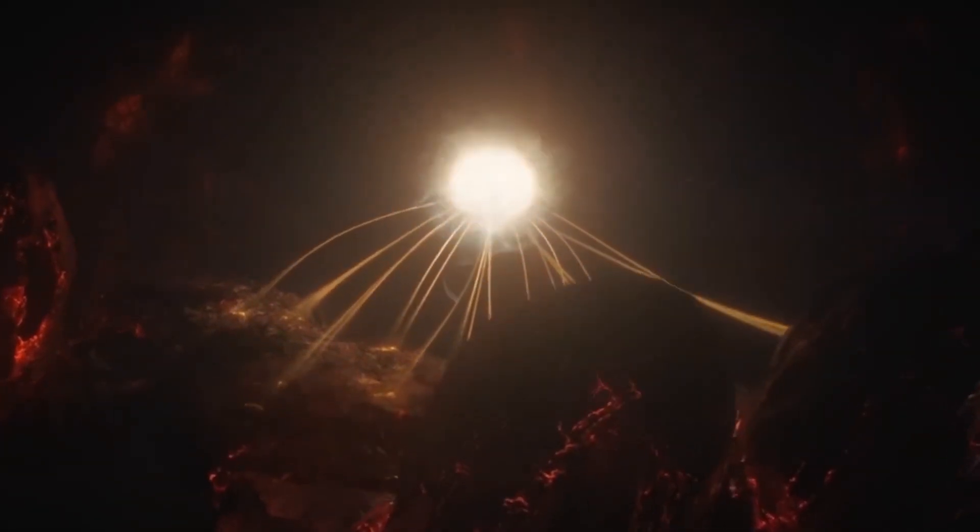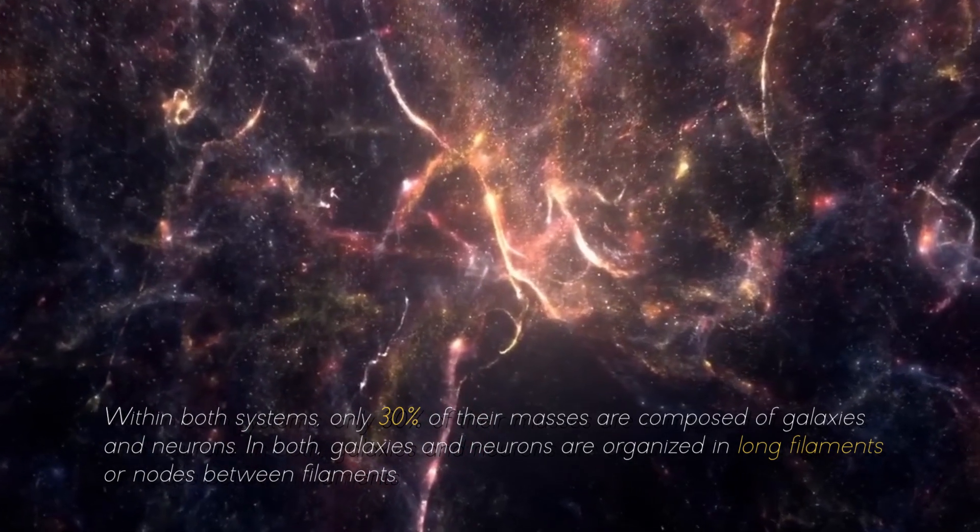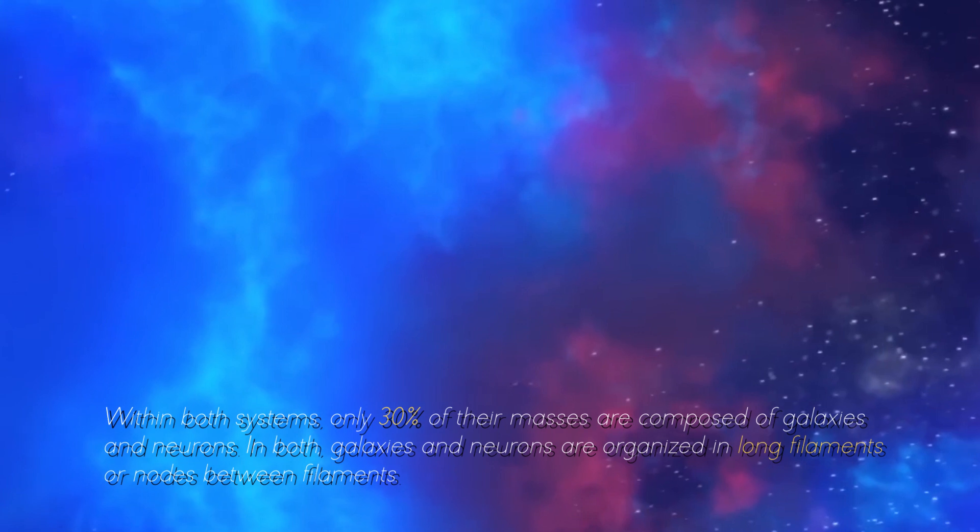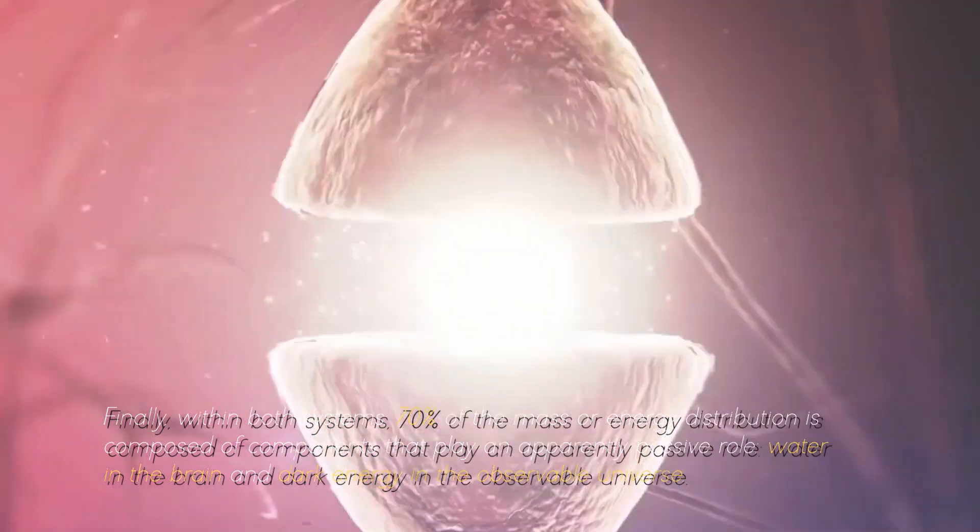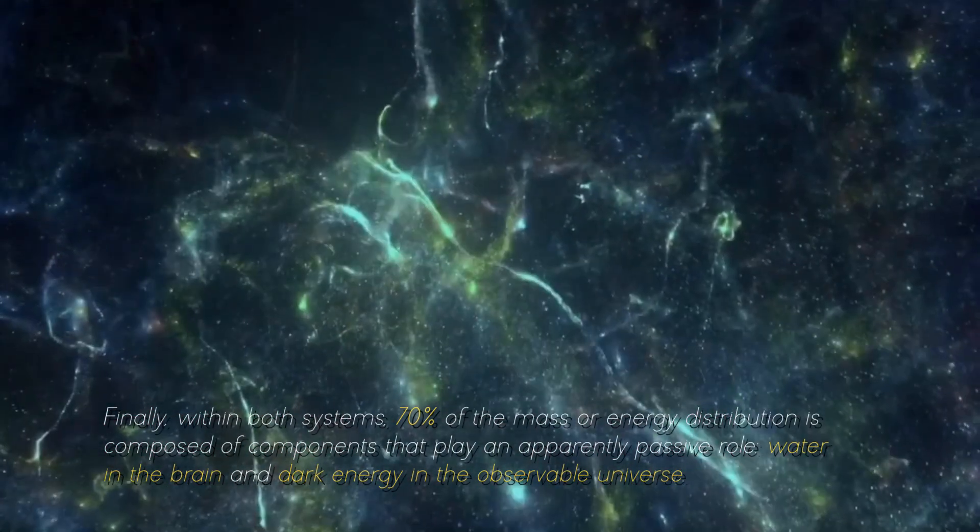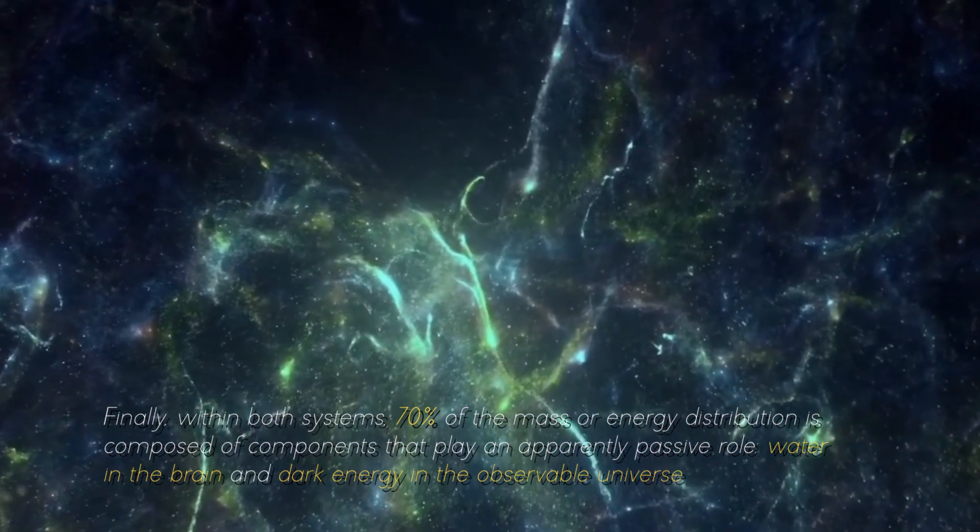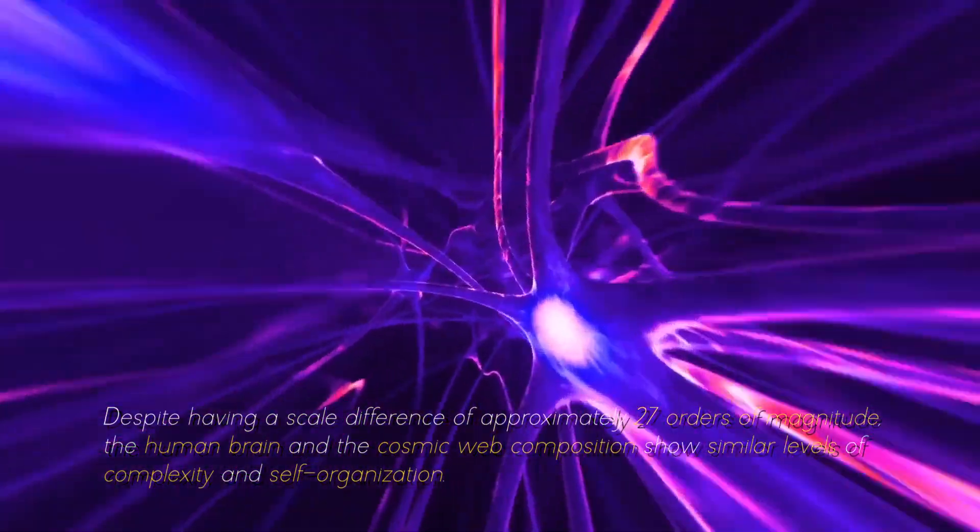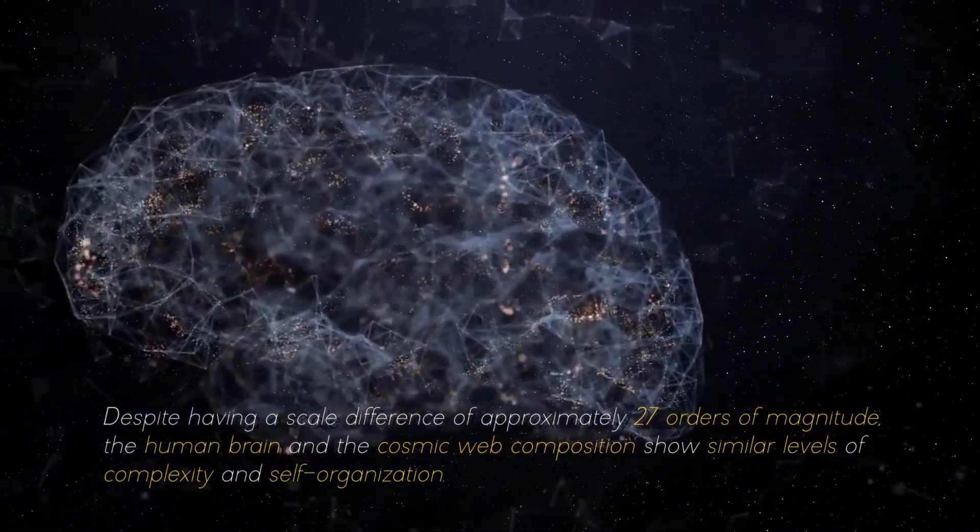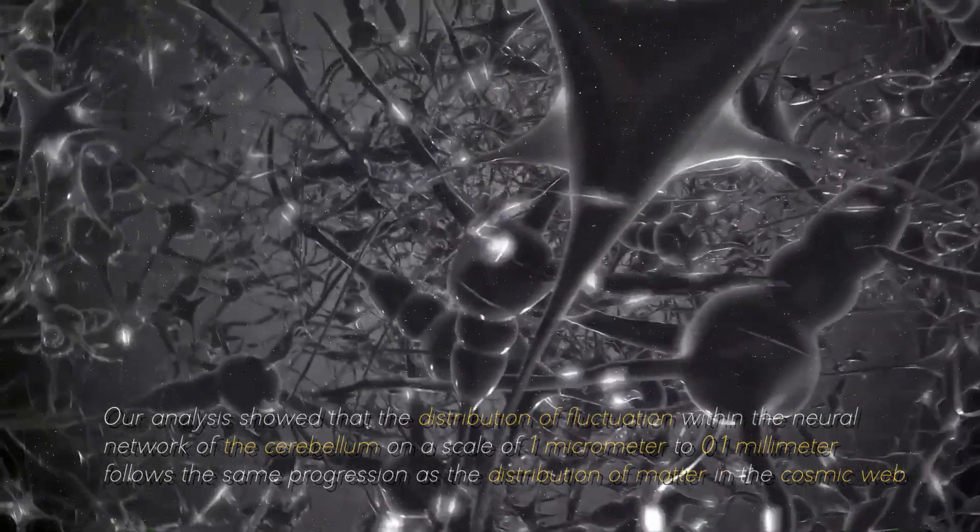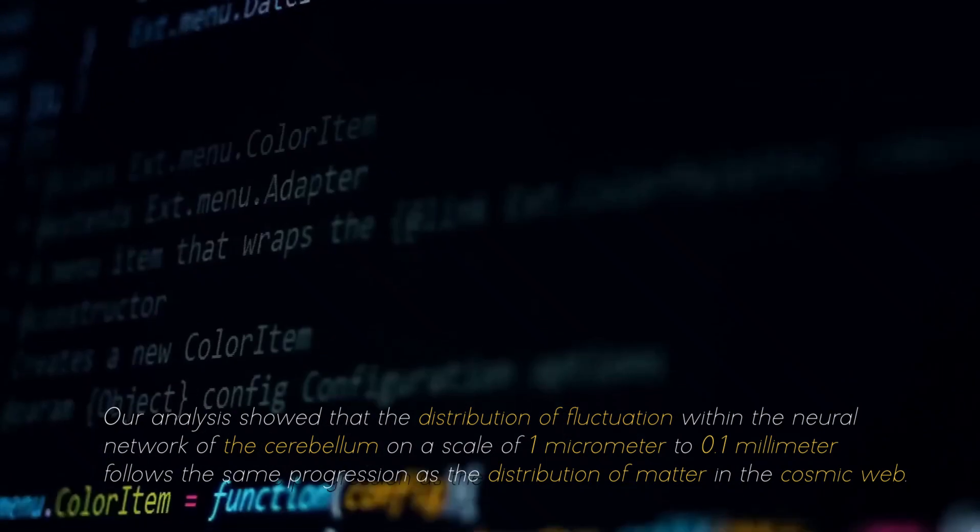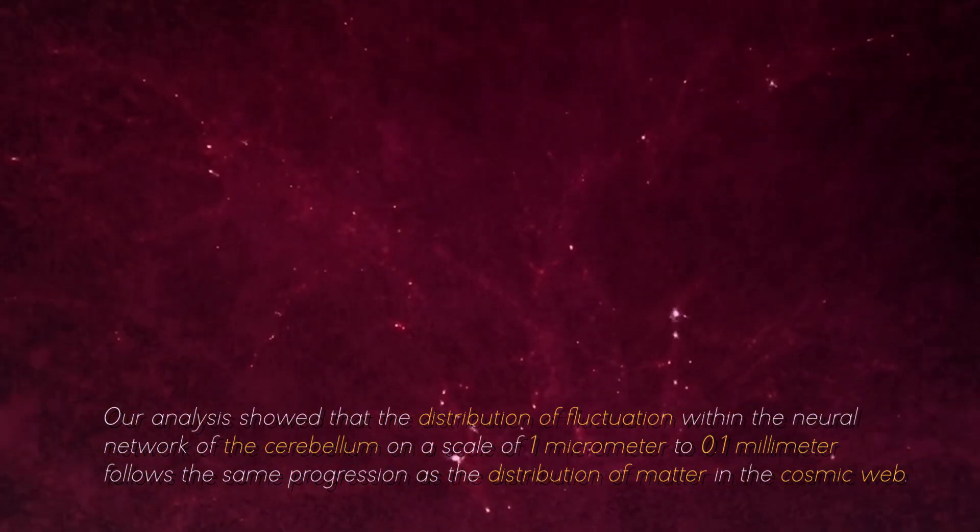Thus, it is not that our brain is like a universe, or that the universe is a brain of titanic proportions, but that their dynamics are similar. Within both systems, only 30% of the masses are composed of galaxies and neurons. In both, galaxies and neurons are organized in long filaments and nodes between filaments. Finally, within both systems, 70% of the mass or energy distribution is composed of components that play an apparently passive role, water in the brain and dark energy in the observable universe. Despite having a scale difference of approximately 7 orders of magnitude, the brain and the cosmic web composition show similar levels of complexity and self-organization. Our analysis showed that the distribution of fluctuation within the neutral network of the cerebellium on a scale of 1 micrometer to 0.1 millimeters follows the same progression as the distribution of matter in the cosmic web, commented one of the researchers in charge of this project.